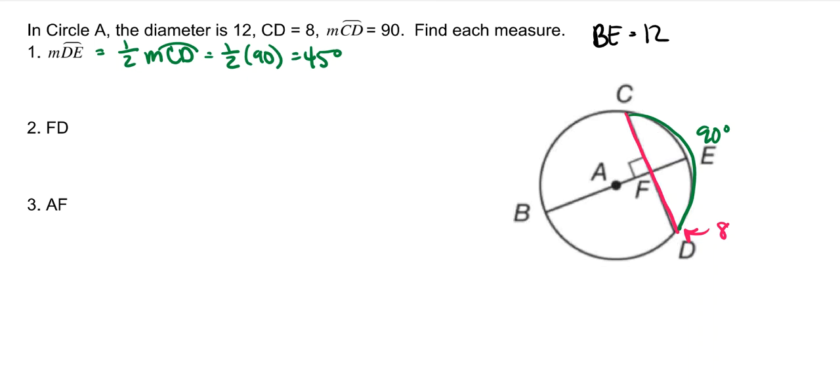FD. FD. All right. So FD, it showed you that all of CD is 8. And because this chord is perpendicular to the radius or the diameter, either way, then we know that these are also congruent. So if the whole thing is 8, then FD would have to be half of that. So it's 4.